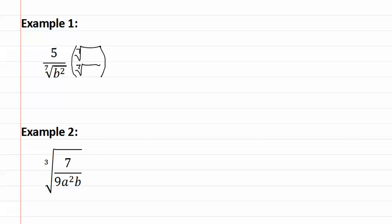As you can see, we already have two b's. So we're missing five more b's to make all of them come out. So we multiply the numerator and denominator by this.